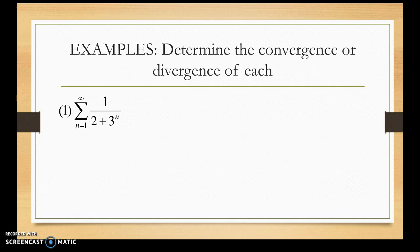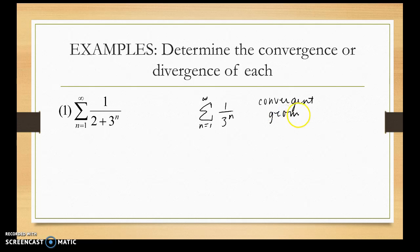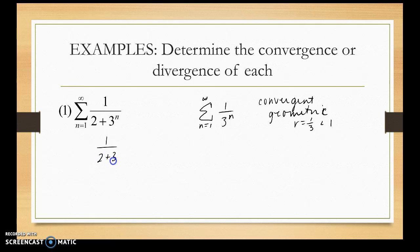Determine the convergence or divergence. The first thing you ask yourself is: what can I compare this to? Looking at the given series, let's compare it to 1 over 3 to the n, which is a convergent geometric series — the ratio is 1/3, and the absolute value of 1/3 is between 0 and 1. The terms of 1 over (2 + 3^n) are less than the terms of 1 over 3^n — bigger denominator, smaller fraction. Since we're comparing to a convergent series, this series converges as well.